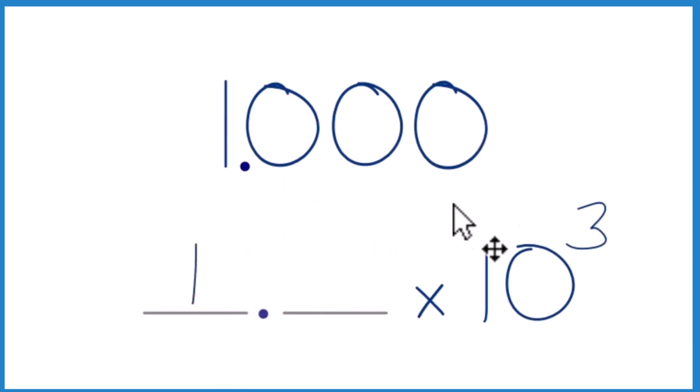Sometimes when you take something like a thousand and convert it to scientific notation, you'll just have one times 10 to the third. You may be asked to put a zero here, check with your teacher, or maybe more than one zero.